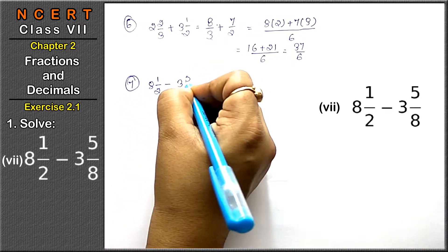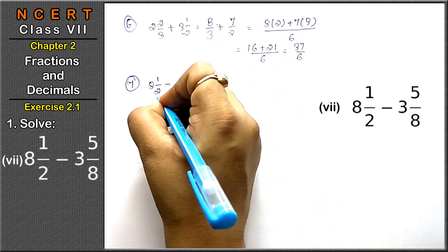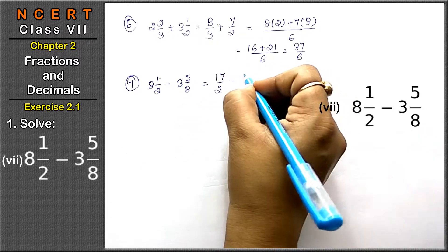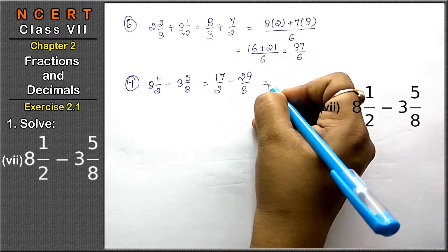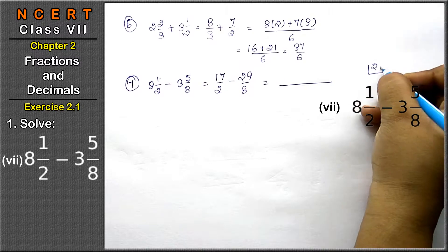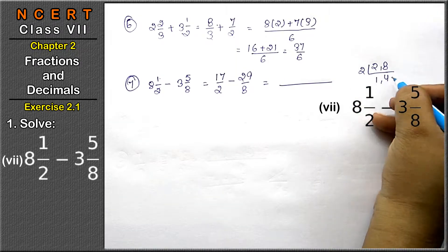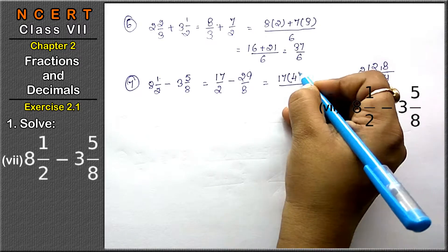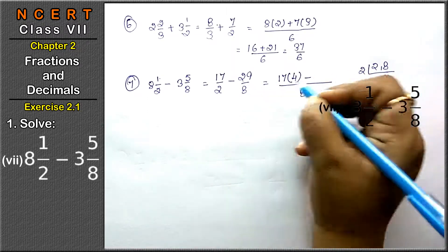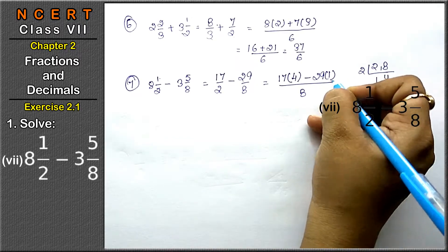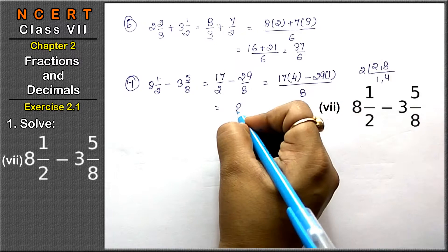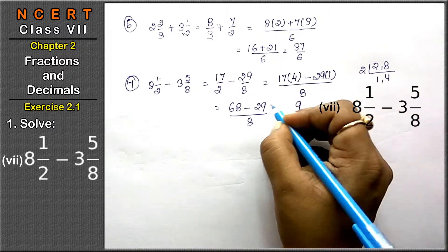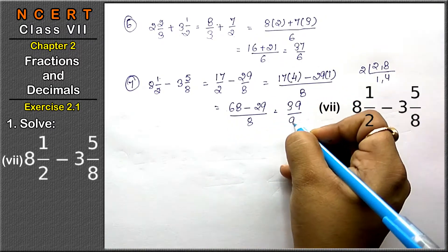The last part is 8 and 1 upon 2 minus 3 and 5 upon 8. Convert to improper fractions: 2 times 8 plus 1 is 17 upon 2, and 8 times 3 plus 5 is 29 upon 8. LCM of 2 and 8 is 8. Multiply: 17 into 4 minus 29 into 1, giving 68 minus 29 upon 8, which equals 39 upon 8 is the answer.